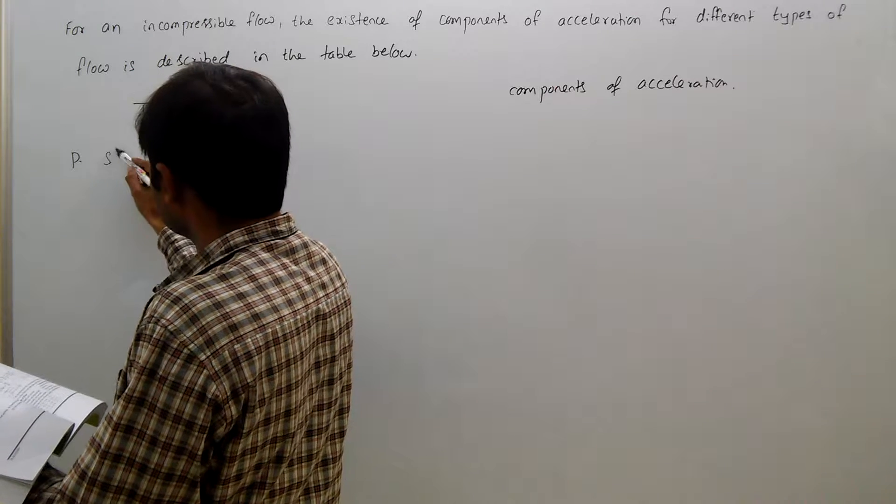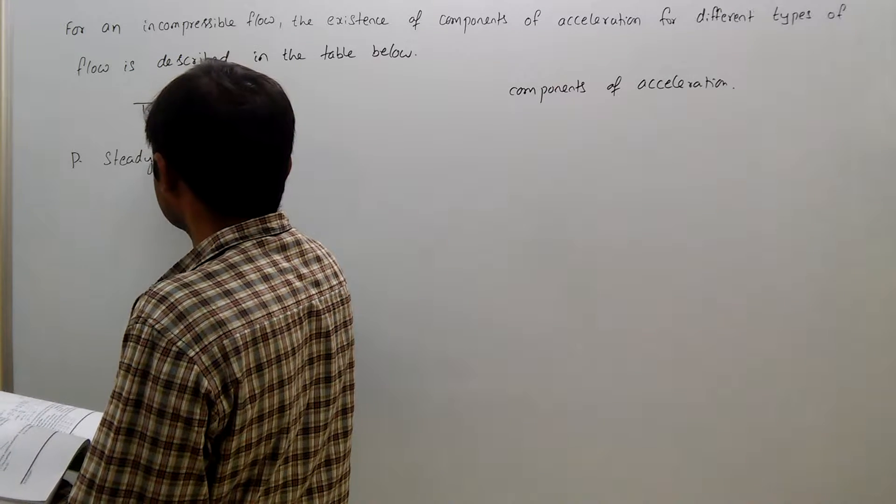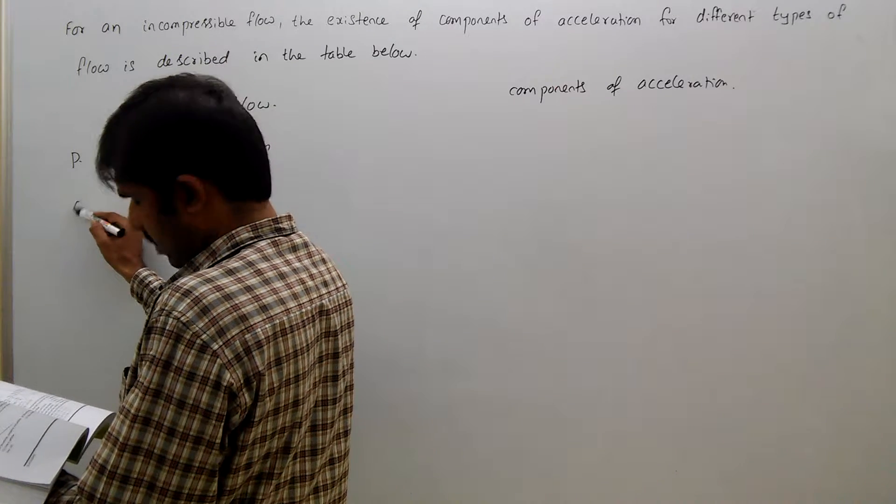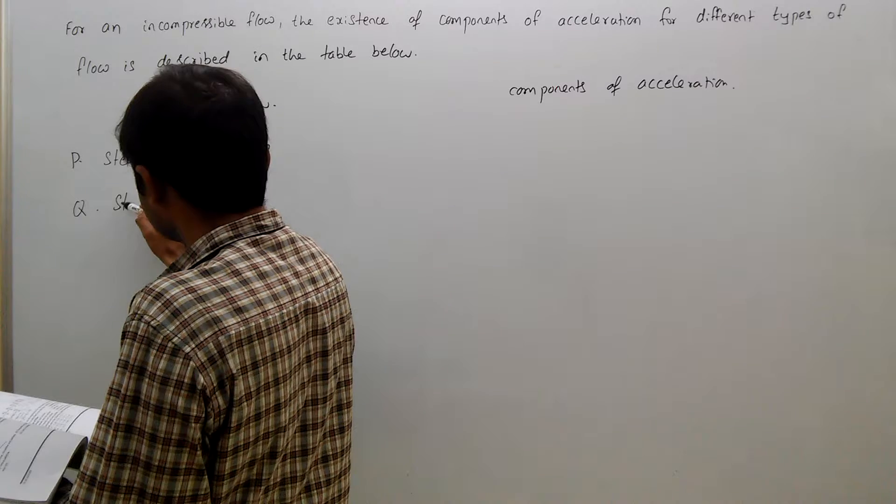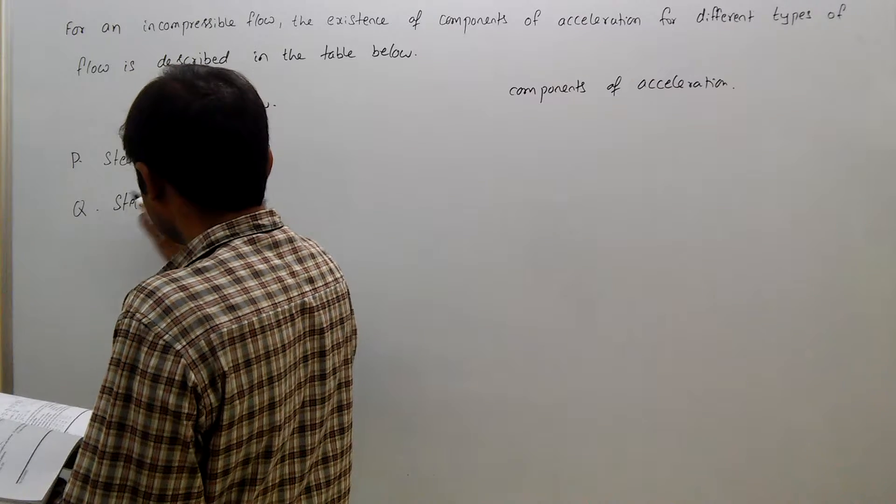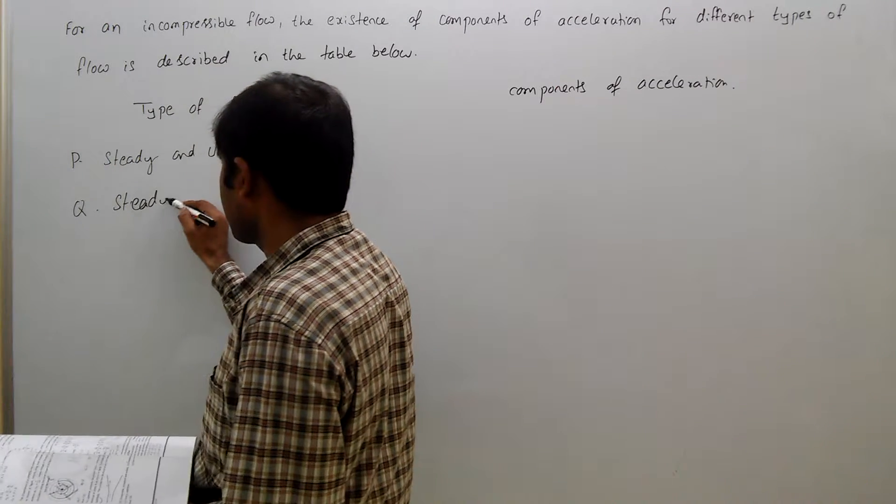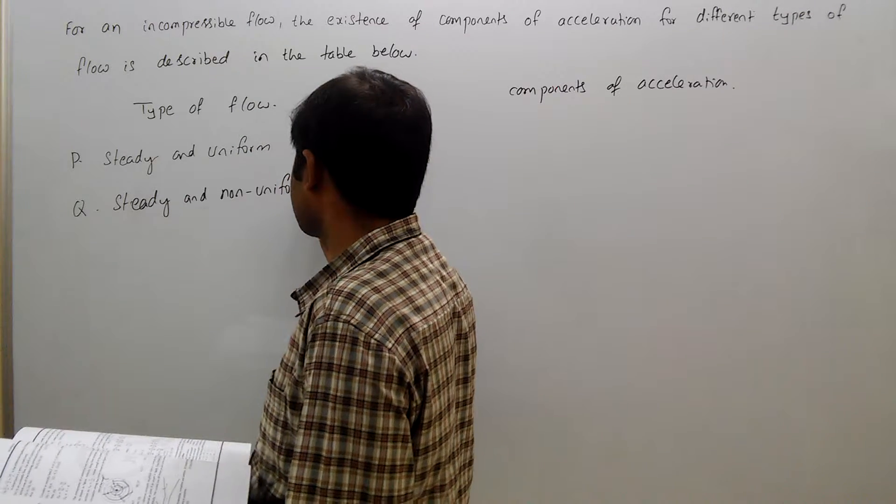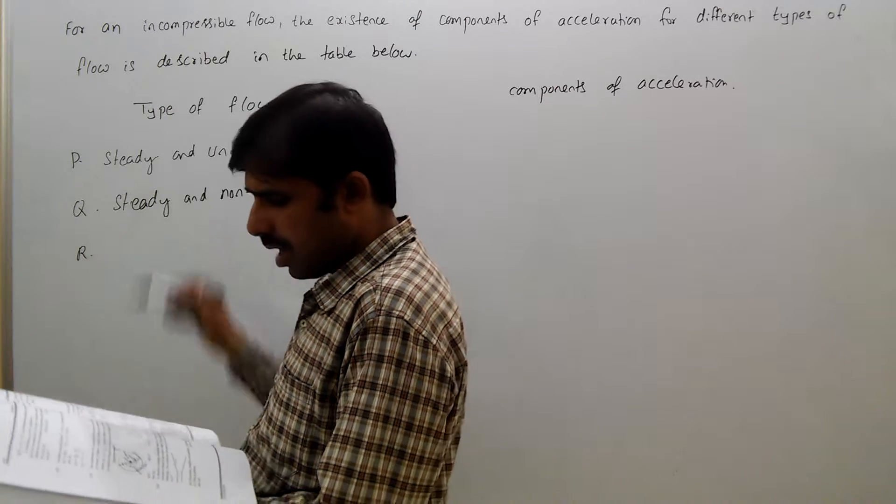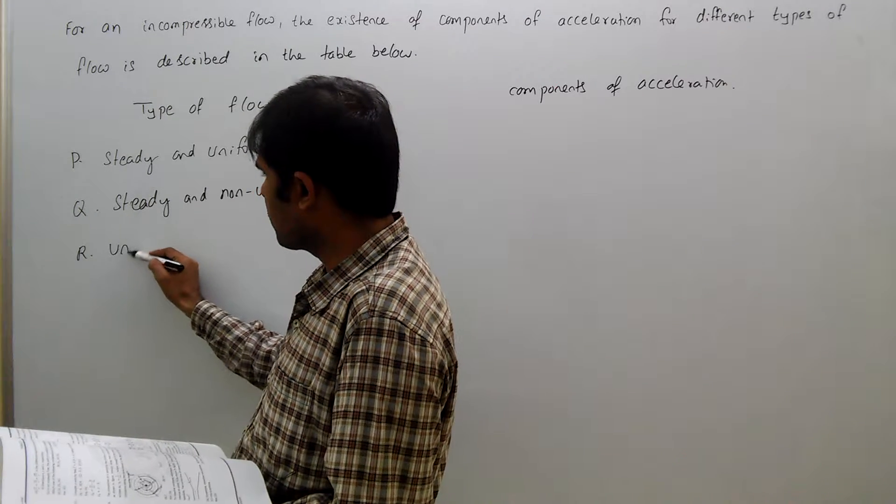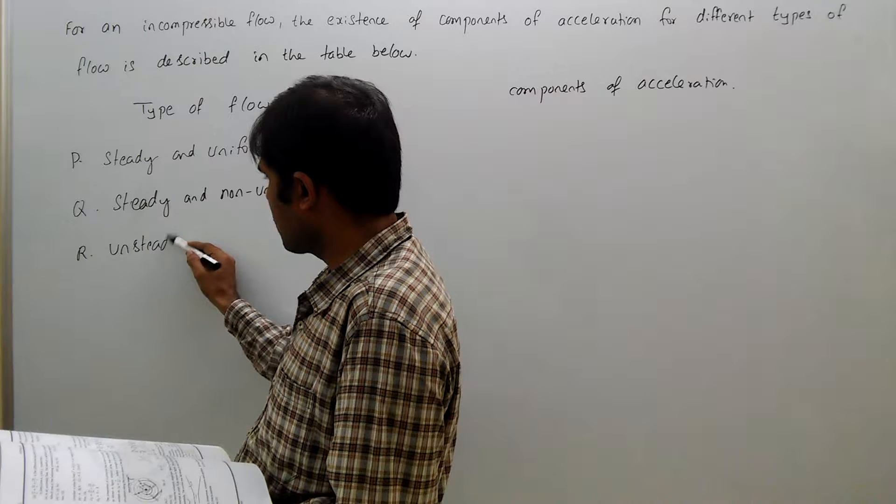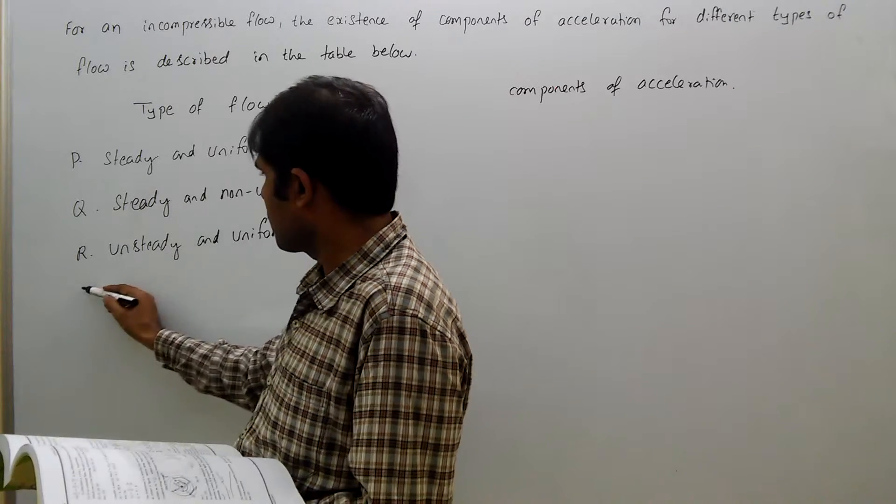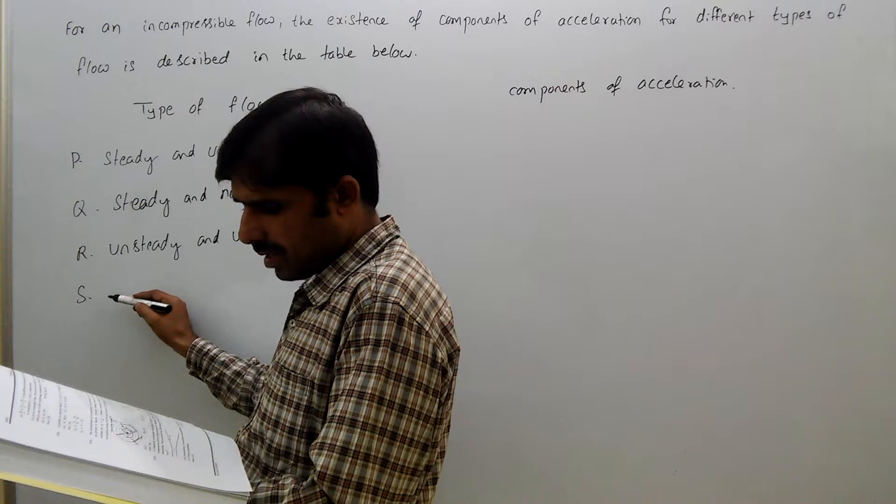The flow types are: P - steady and uniform, Q - steady and non-uniform, R - unsteady and uniform, S - unsteady and non-uniform.